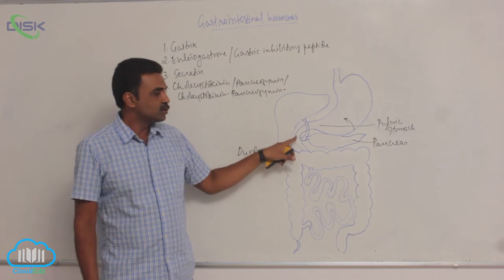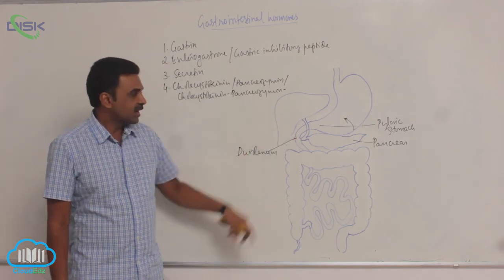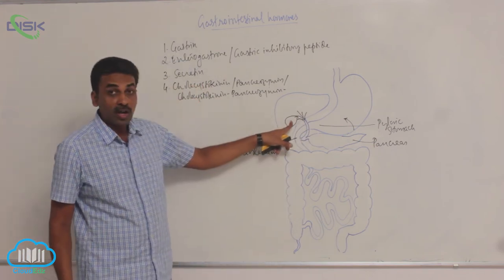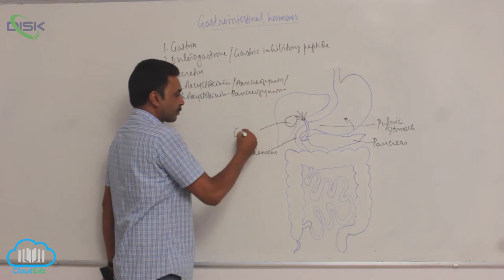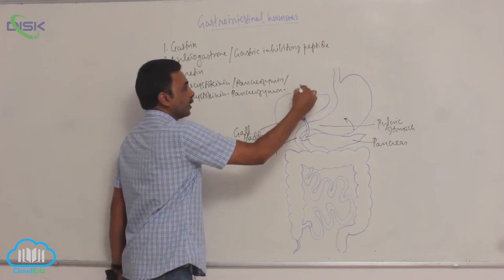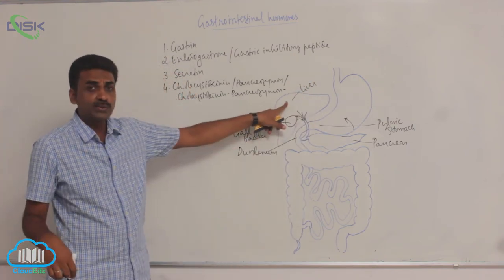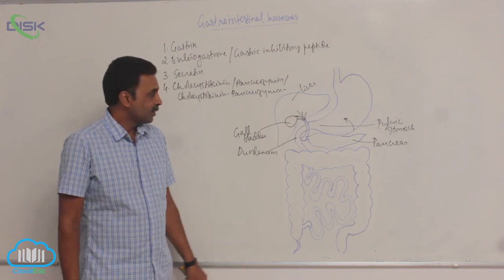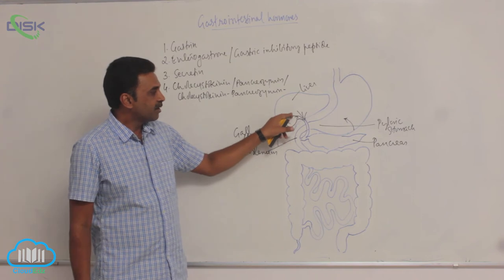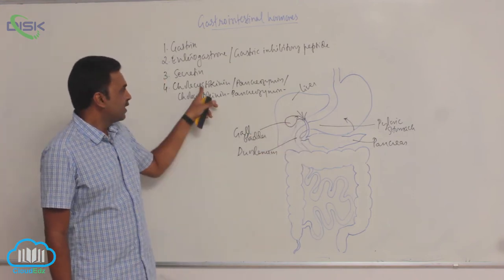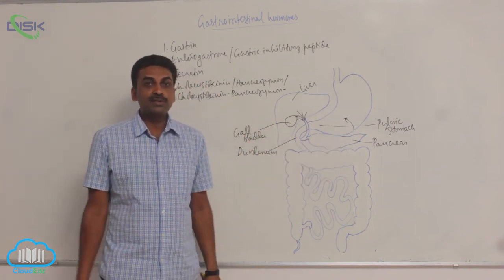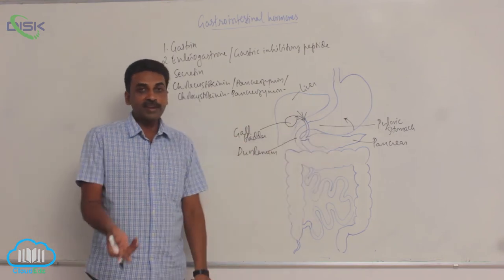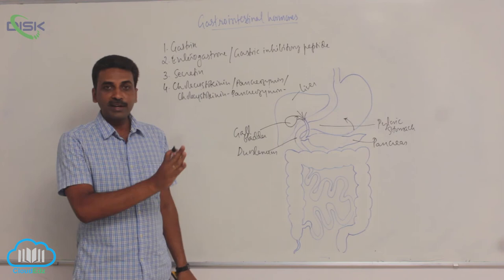Cholecystokinin is also produced from the wall of the duodenum. It acts on the gallbladder. The liver produces bile juice, which is temporarily stored inside the gallbladder. Under the influence of cholecystokinin, the gallbladder releases bile juice. Under the influence of the same cholecystokinin, the pancreatic acini produce pancreatic enzymes. So both secretin and cholecystokinin act on the pancreas, and cholecystokinin also acts on the gallbladder to release bile juice.